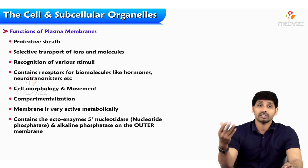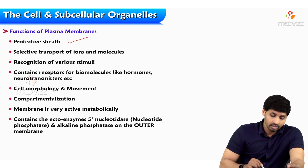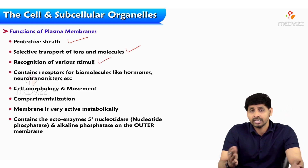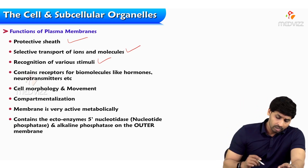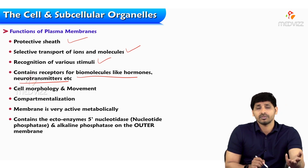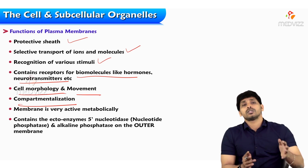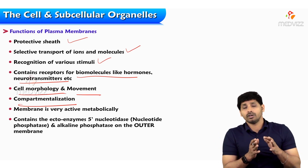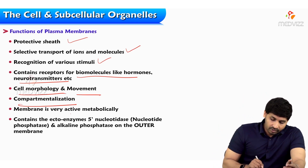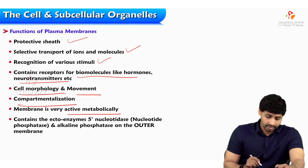Coming to the functions of the cell membrane: protection — giving protection to the subcellular organelles, acting as a protective sheet; transportation of ions and molecules to inside and outside of the cell; recognition of various stimuli; cell-to-cell signaling; cell-to-cell contact; and contains receptors for biomolecules like hormones and neurotransmitters for transferring information. Also: cell morphology and movement, compartmentalization — because one cell belongs to one compartment, and subcellular organelles are also compartmentalized. The membrane is metabolically very active.